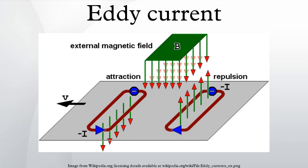Eddy currents in conductors of non-zero resistivity generate heat as well as electromagnetic forces. The heat can be used for induction heating. The electromagnetic forces can be used for levitation, creating movement, or to give a strong braking effect.